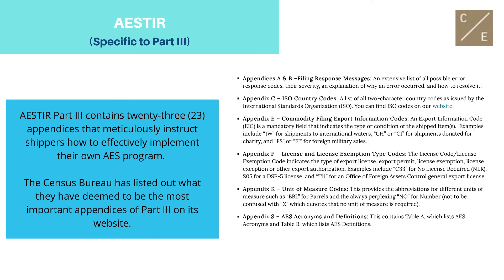Appendices A and B detail filing response messages. Appendix C details the International Standards Organization country codes. Appendix E gives the commodity filing export information codes. Appendix F lists the license and license exemption type codes. Appendix K gives the unit of measure codes. And finally, Appendix S defines the AES acronyms and definitions.